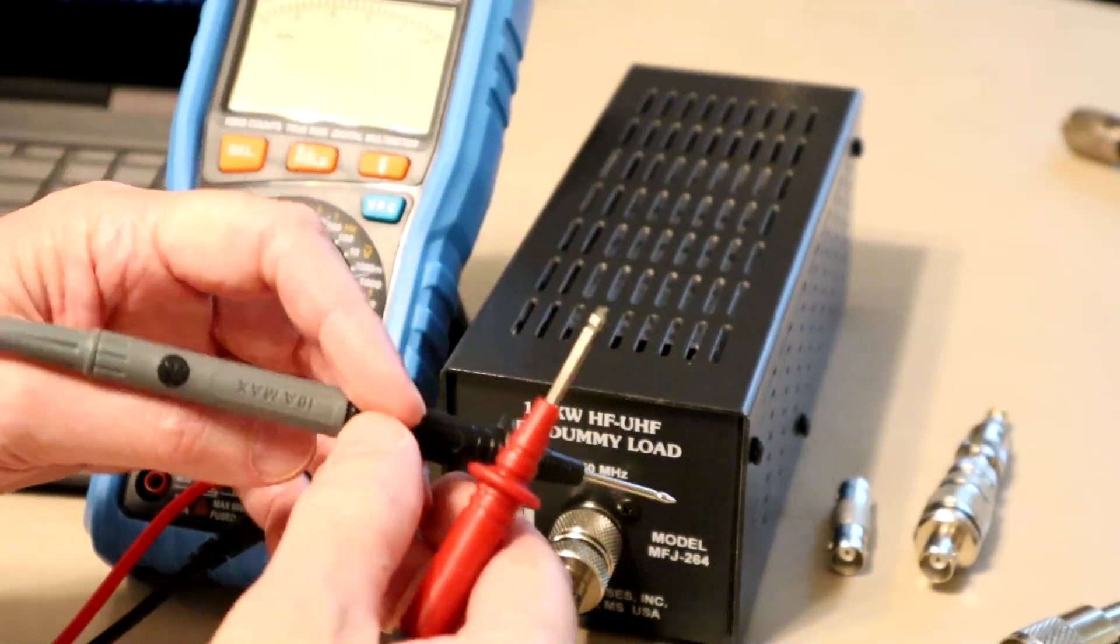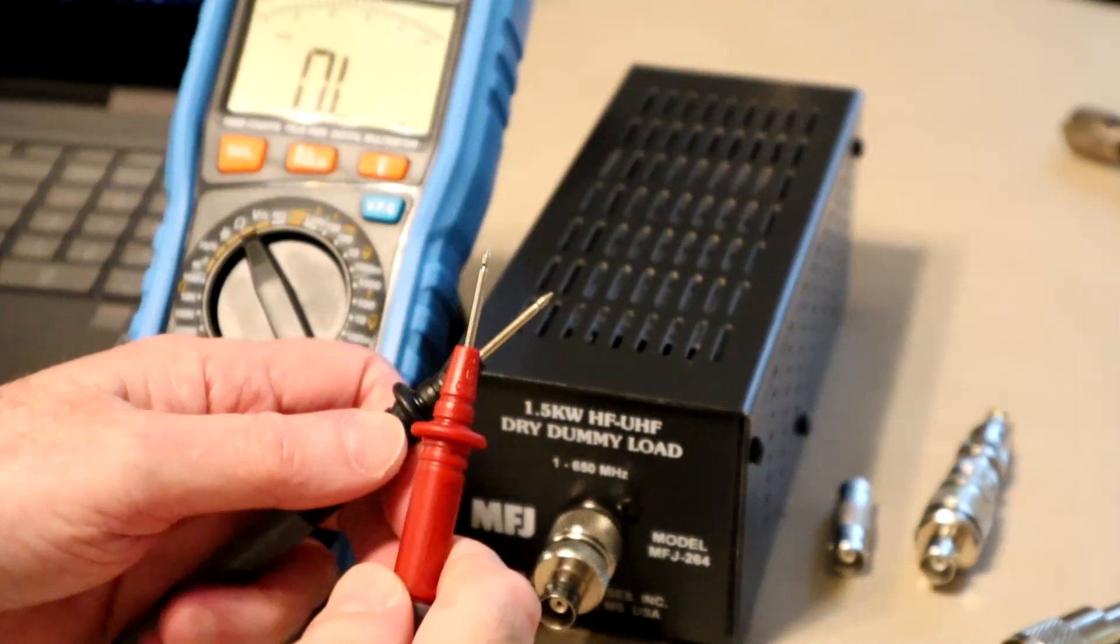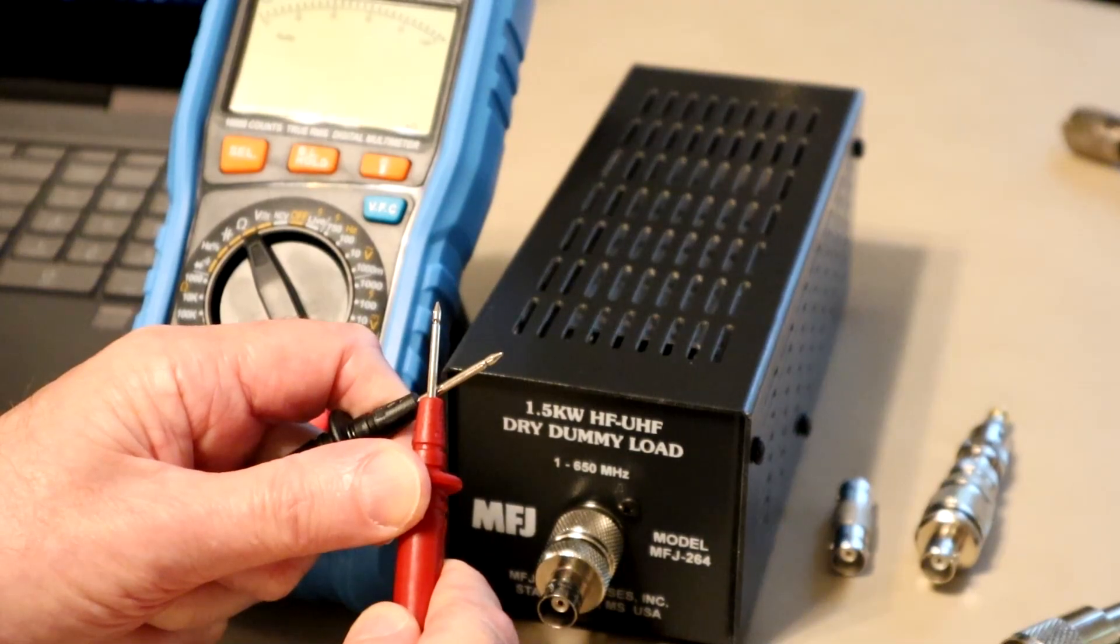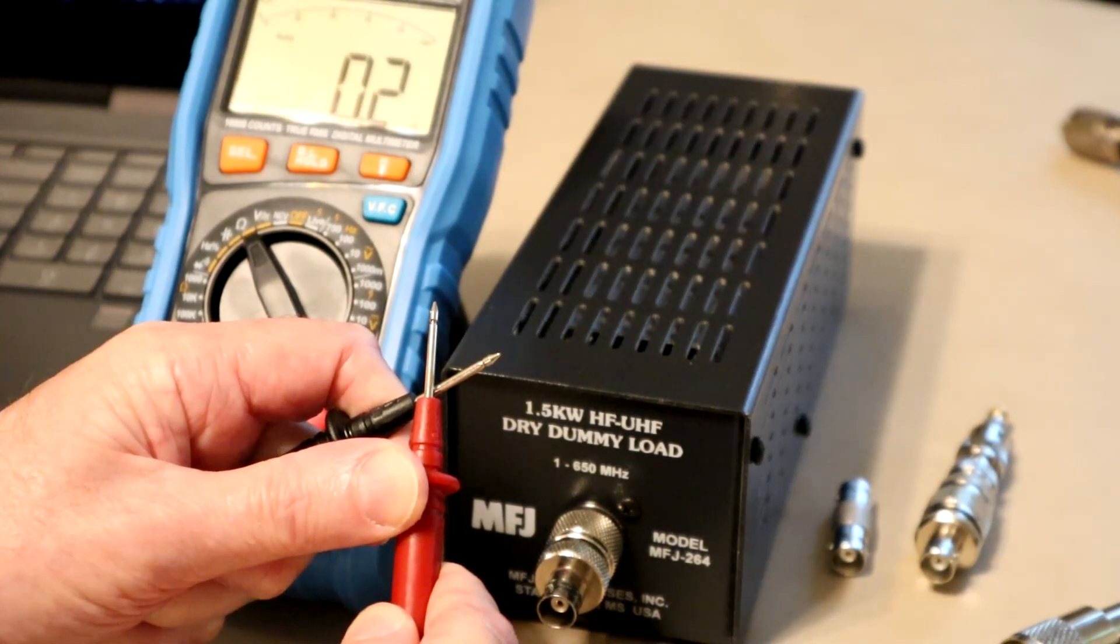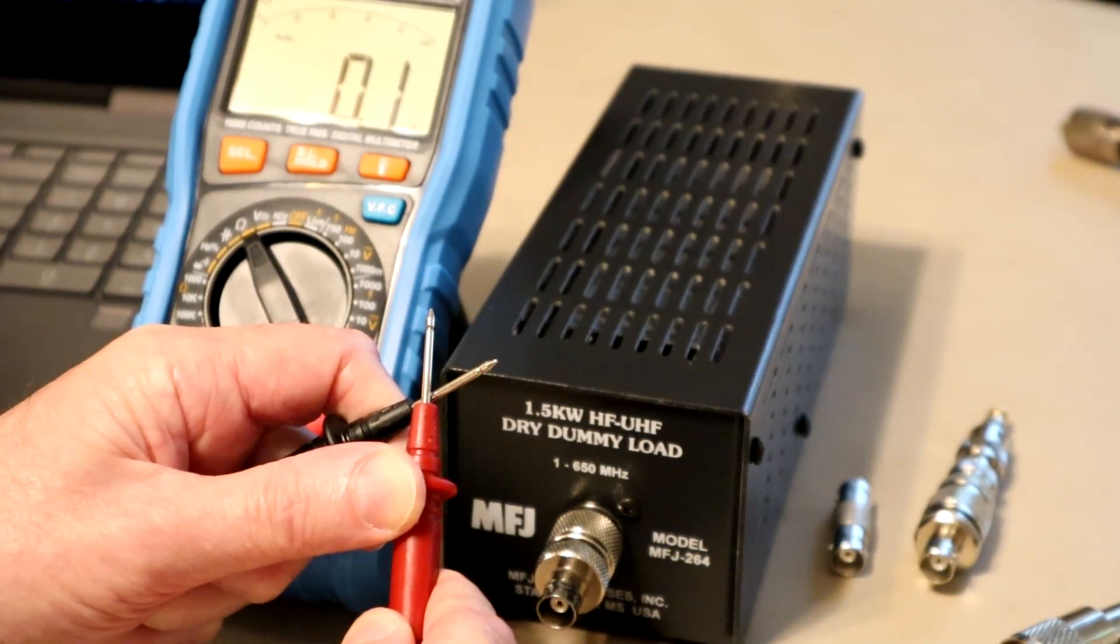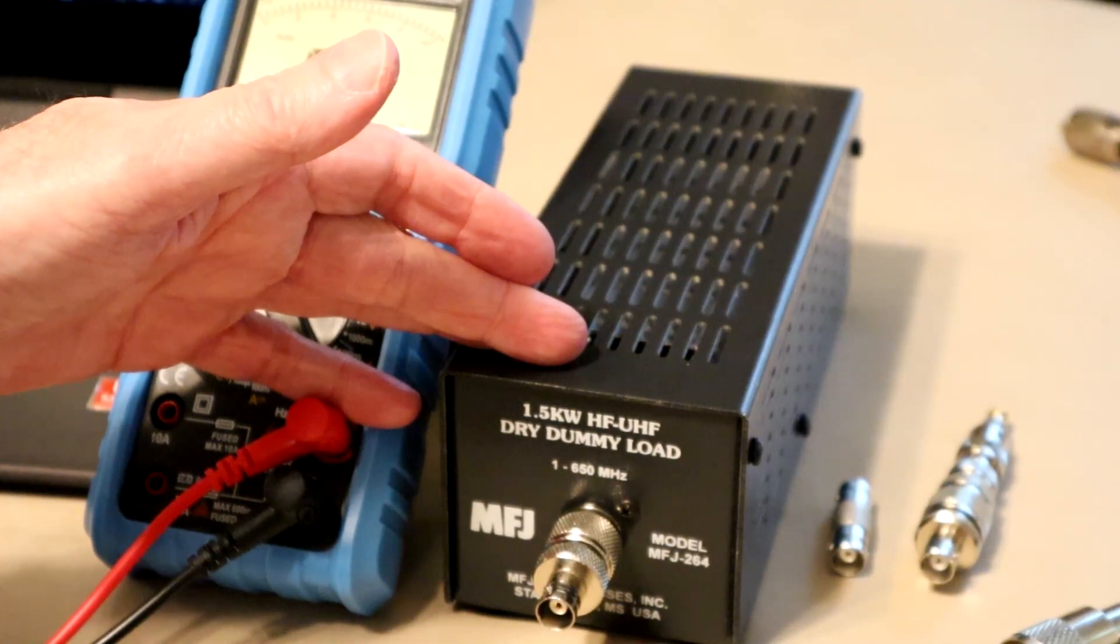All right now is that number correct? Well not exactly because these leads probably have some resistance so let's back that out. If I touch these together it says 0.2. If I wait long enough it says 0.1. So that means that our load here is probably about 50.8 ohms.